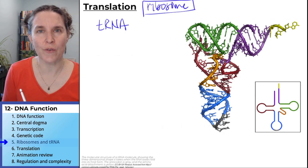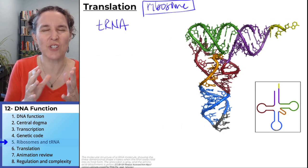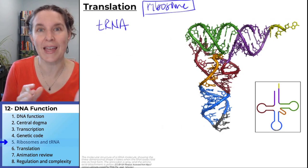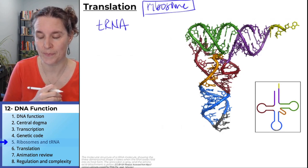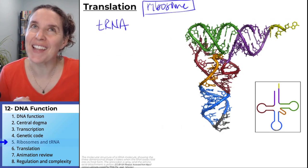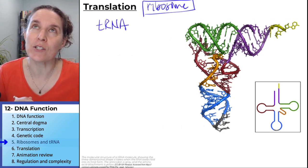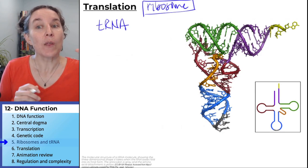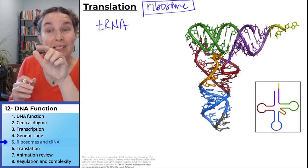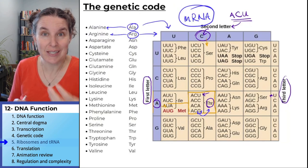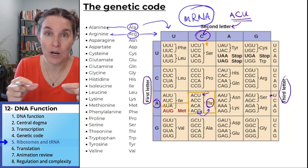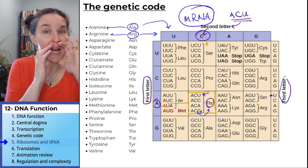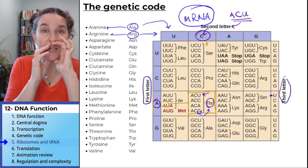We're going to look at the structure of the ribosome so that we have some context for the parts we're going to be talking about when we deal with the actual process of translation. Remember in the last one, when I said in the genetic code chart, the ribosome uses this genetic code chart to say, the mRNA says ACU, I need someone to bring me a threonine.